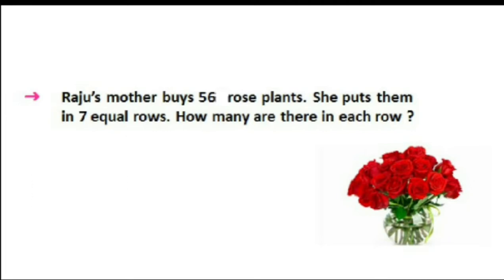Raju's mother buys 56 rose plants. She puts them in 7 equal rows. So 56 plants are to be arranged in 7 rows. We have to find out how many are there in each row — 'each row' means one row.